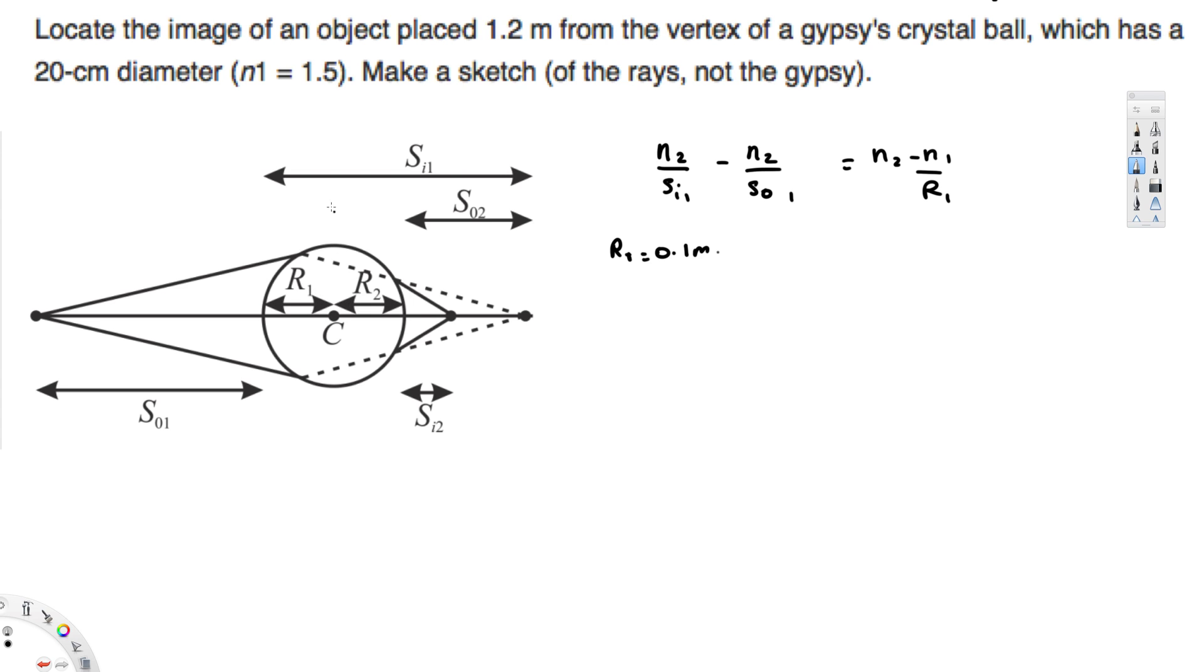So we can go ahead and plug this value in the equation. And n₂ is the refractive index of this one, that is 1.5. So this is going to be 1.5 divided by sᵢ₁ minus the refractive index...